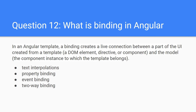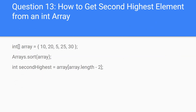Question 12: what is binding in Angular? In Angular, a binding creates a live connection between a part of the UI created from a template and the model. If you want to create a connection between the model and the template — which is the HTML elements and DOM elements like directives or components — examples of binding include text interpolation, property binding, event binding, and two-way binding.